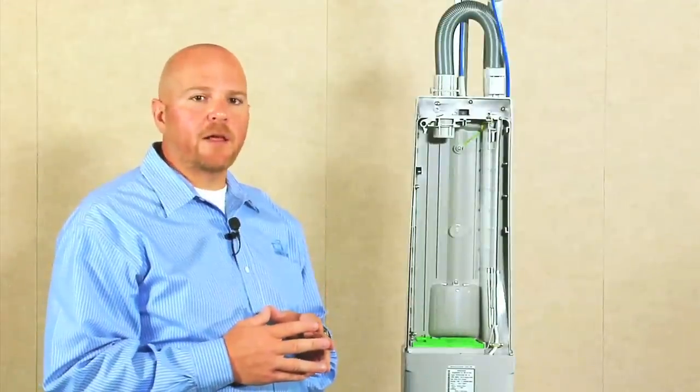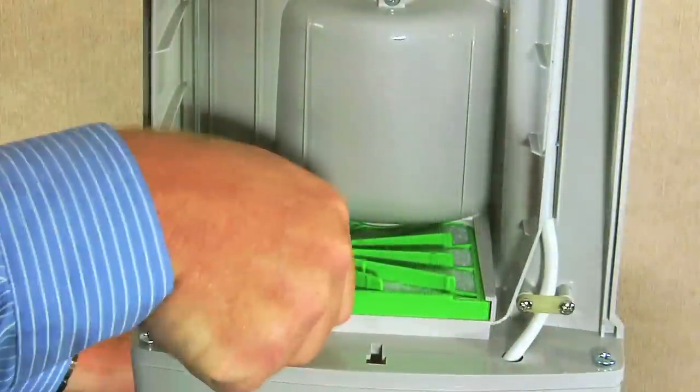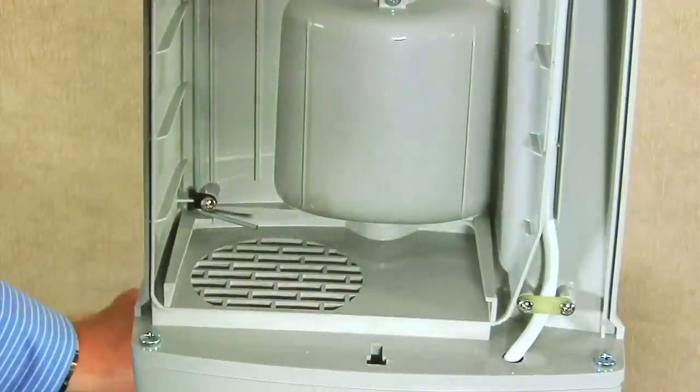The secondary filter on the Versimatic should be maintained on a regular basis. It should be cleaned and free of debris and twice a year it should be replaced. To remove it simply lift up and pull it straight out.